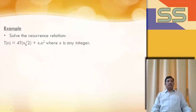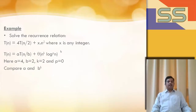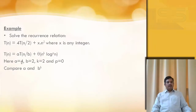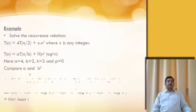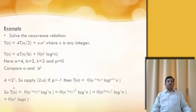T(n) = 4T(n/2) + x·n², where x is any integer. Again we find a = 4, b = 2, k = 2, and p = 0. Comparing a and b^k: 4 = 2², so we apply formula 2a. If p is greater than -1, then T(n) = Θ(n^(log base b of a) · log^(p+1)(n)). Substituting, T(n) = Θ(n^(log base 2 of 4) · log^1(n)), which becomes Θ(n² log n).